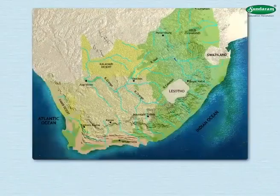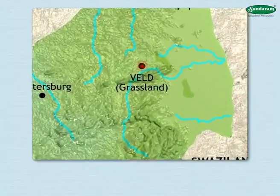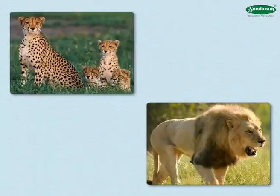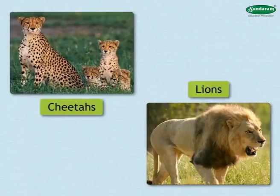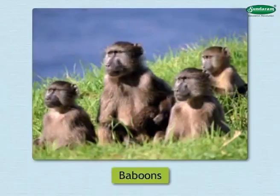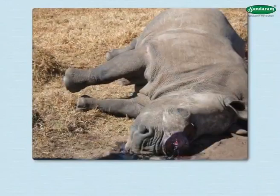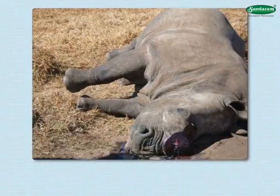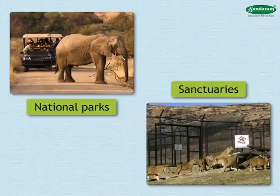Now let us see which animals and birds are found in this country. In the Veld Grasslands, herbivores like bison and elephants, carnivores like cheetahs and lions, and omnivores like baboons are found in large numbers. Due to large-scale hunting in recent decades, the number of these animals has dwindled. To counter the situation, the government has established national parks and sanctuaries.